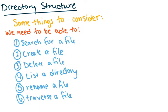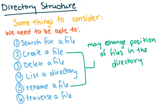When we talk about directory structure, some things we need to consider: we need to be able to search for a file, create files, delete files, list a directory, and name a file. To do some of these — for instance, creating and removing a file — this may change the position of the file in the directory, so we need some way of reordering or filling in the directory.